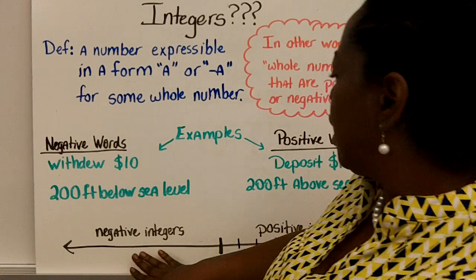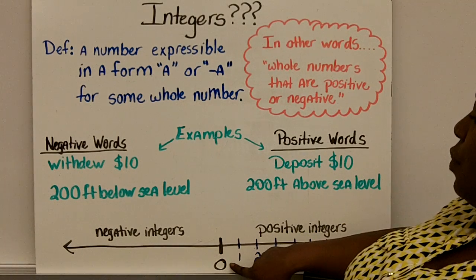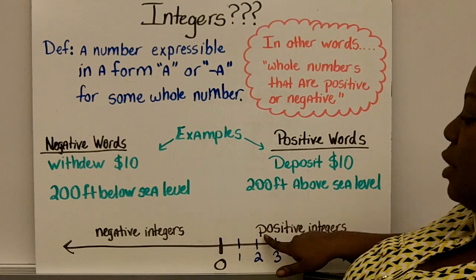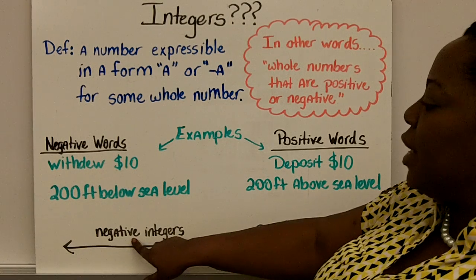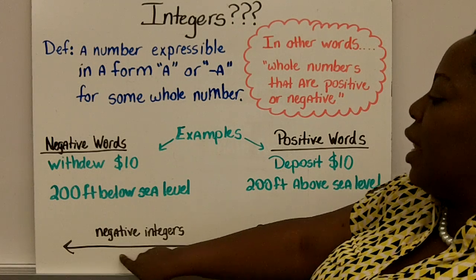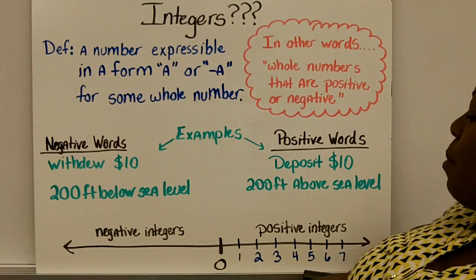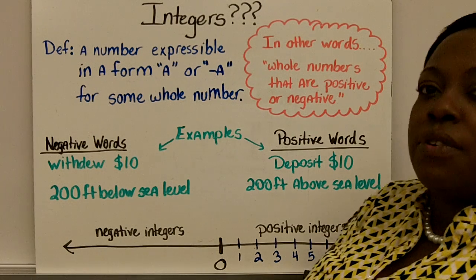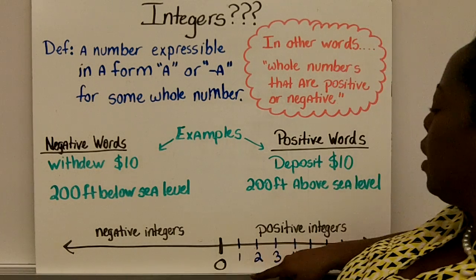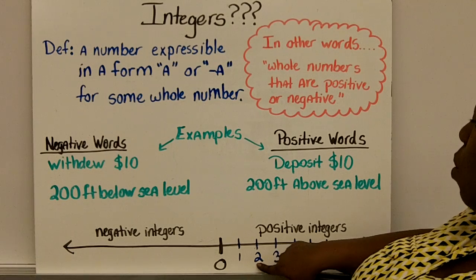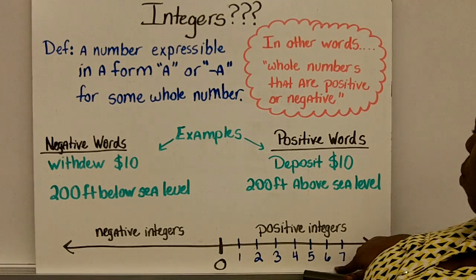On a number line, we have zero. Zero separates negative integers and positive integers. Your negative integers are going to be on the left-hand side of the zero, while your positives will be on the right. Most of us are pretty familiar with positive numbers and how they look on a number line. They start with one and go up gradually, one by one.